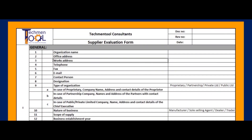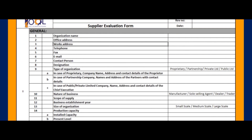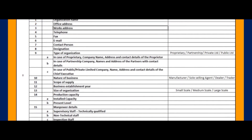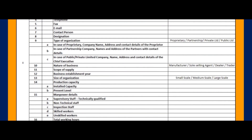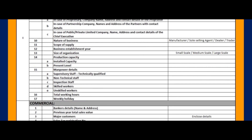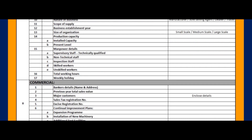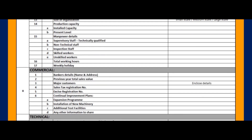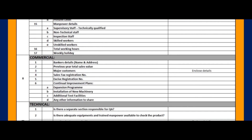The format of supplier evaluation consists of questionnaires in order to evaluate their capability. The buyer sends this format to the supplier to fill in all the necessary information for their evaluation and approval process. This consists of general, commercial, and technical information about the supplier's organization.